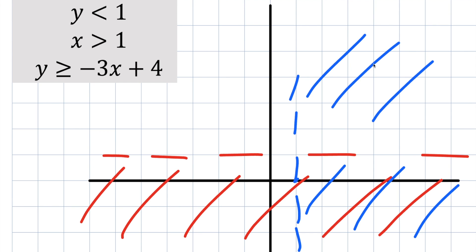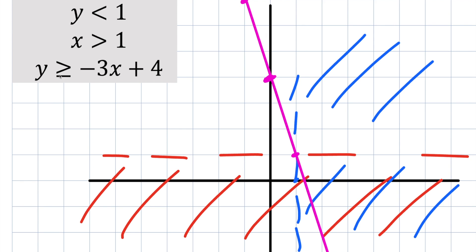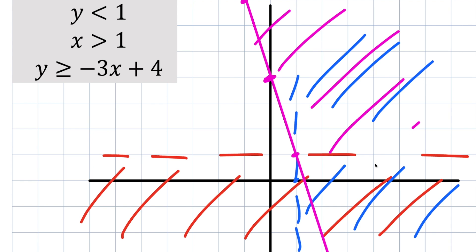This third inequality says y is greater than or equal to negative 3x plus 4. Let's find the y-intercept: if x is 0, then y is 4. We get another point by going up 3 and left 1 because of the negative 3x slope, and again up 3 and right 1. This is a solid line since it includes or equal to, and we shade everything above.